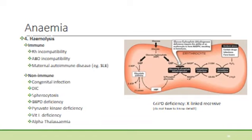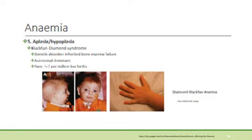Anaemia can also occur due to bone marrow failure — aplasia or hypoplasia — where there is impaired red blood cell production. Diamond-Blackfan anaemia is such a syndrome, a genetic disorder leading to bone marrow failure. It is autosomal dominant and quite rare.